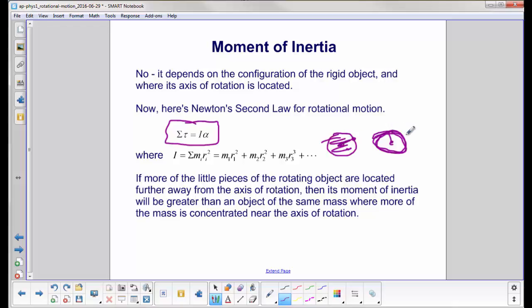This guy clearly has more little pieces further away. So its moment of inertia will be greater than this object, which has the same mass because it has more of the mass closer to the axis of rotation. This shape will have a higher moment of inertia.